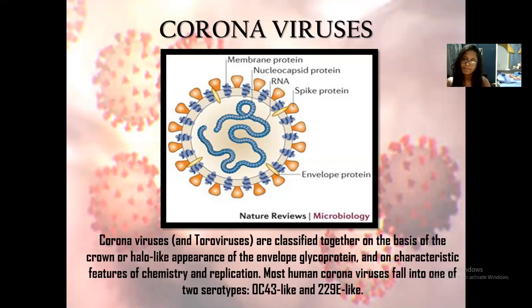Coronaviruses are made up of spherical or pleomorphic envelope particles containing single-stranded positive-sense RNA associated with a nuclear protein within a capsid comprised of matrix protein. The envelope bears club-shaped glycoproteinous projections that are also called spike proteins.